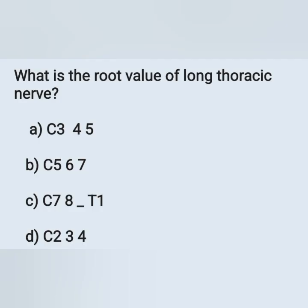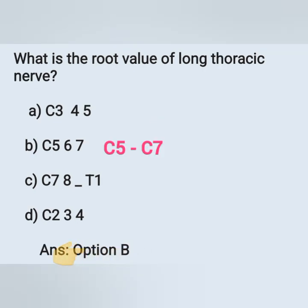What is the root value of the long thoracic nerve? Option A: C3 to C5. Option B: C5, C6, C7. Option C: C7, C8 to T1. Option D: C2, C3 and C4. The root value of the long thoracic nerve is C5 to C7 — that is C5, C6 and C7. Option B is the correct answer. Note: the phrenic nerve goes up to C3 to C5.